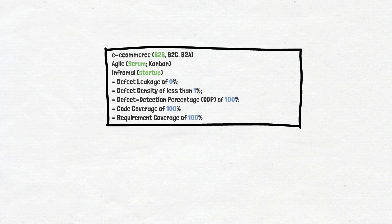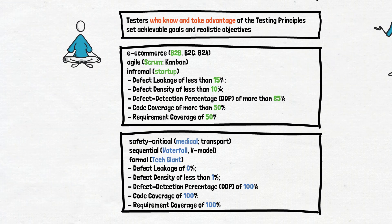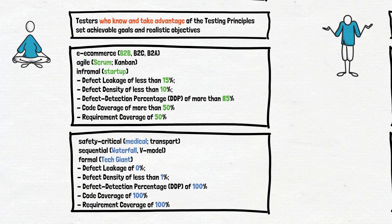It is better to illustrate with the example of testers who don't know the testing principles and set unattainable goals and unrealistic objectives. Let's say you work on the same B2B mobile app in the agile methodology called Scrum, but you set the goals applicable for the safety-critical medical tech giant project.